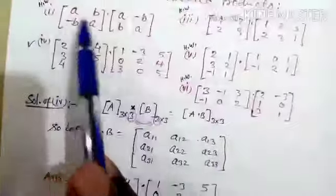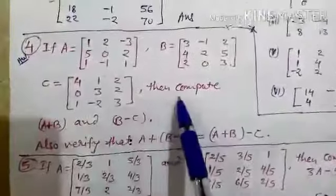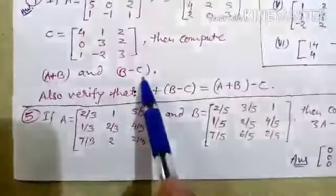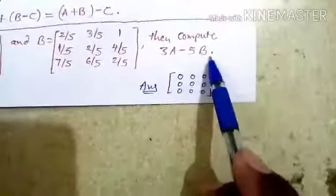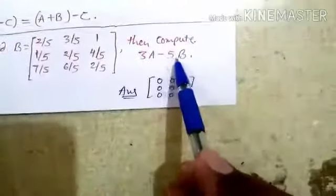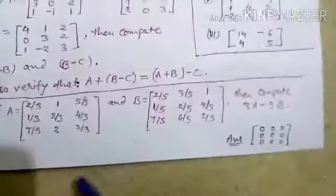You will do the 1st, 3rd, 5th, and 6th parts at home. One more question: question number 4, which is also homework. Matrices A, B, and C are given; compute A plus B and B minus C, and verify that A plus B minus C equals A plus B minus C. Question number 5: if matrix A and matrix B are given, compute 3A minus 5B — the answer is the zero matrix. Multiply matrix A by 3 and matrix B by 5, then find their difference. Thank you, guys.